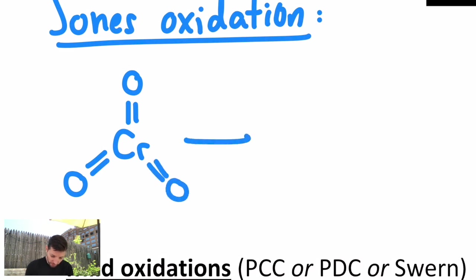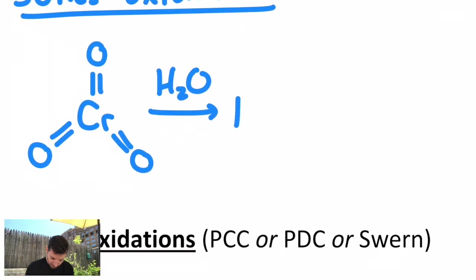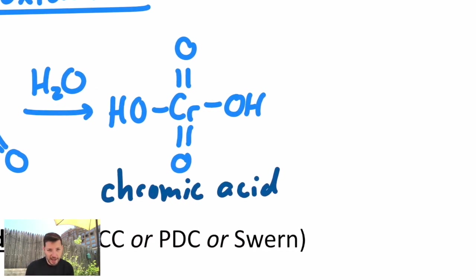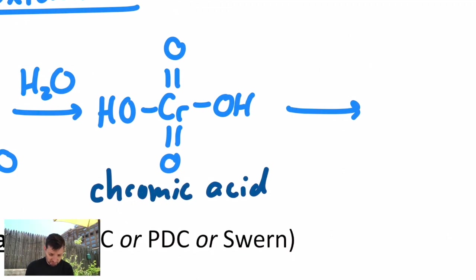I'll show a little bit of how this reaction works. There's chromium oxide. You actually first mix it with water to make chromic acid. This might look a little strange because it's all inorganic chemistry, but we're going somewhere. There's chromic acid.